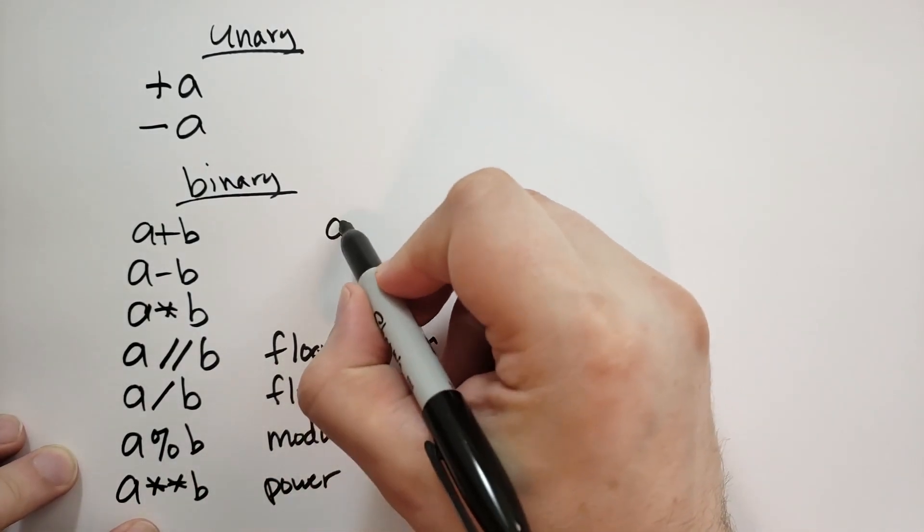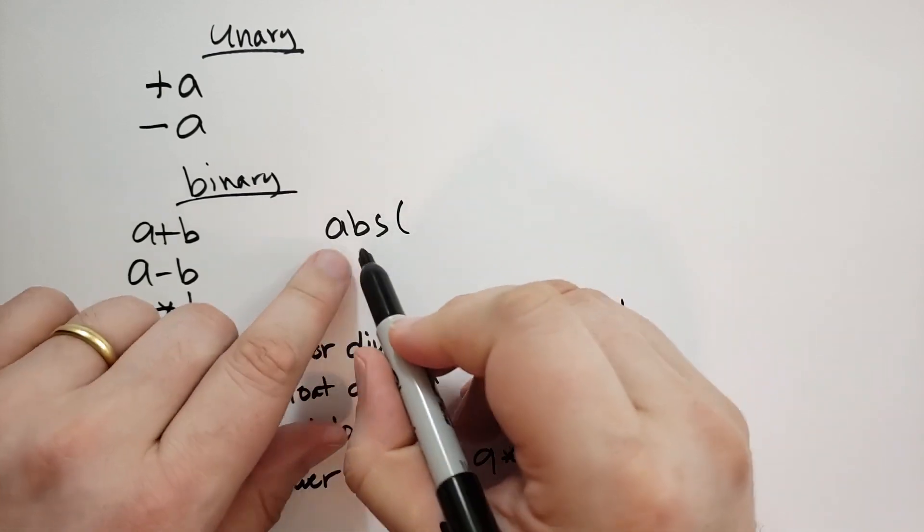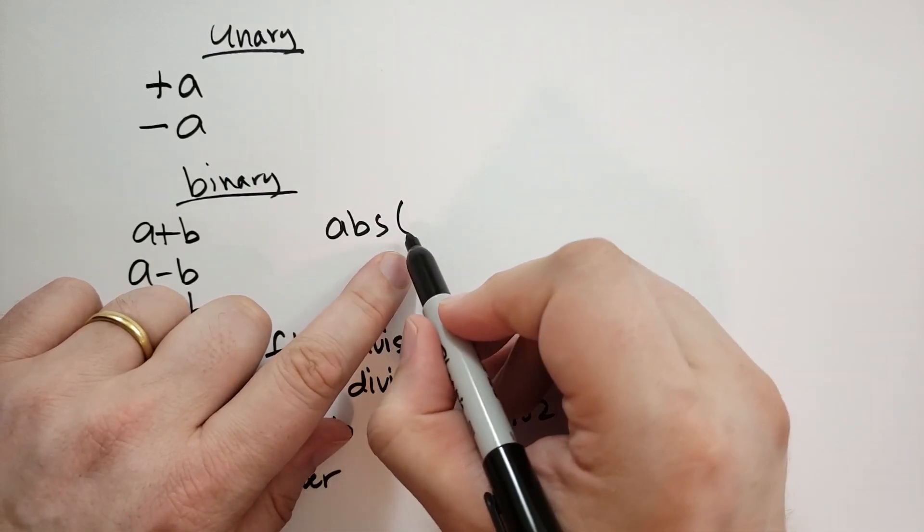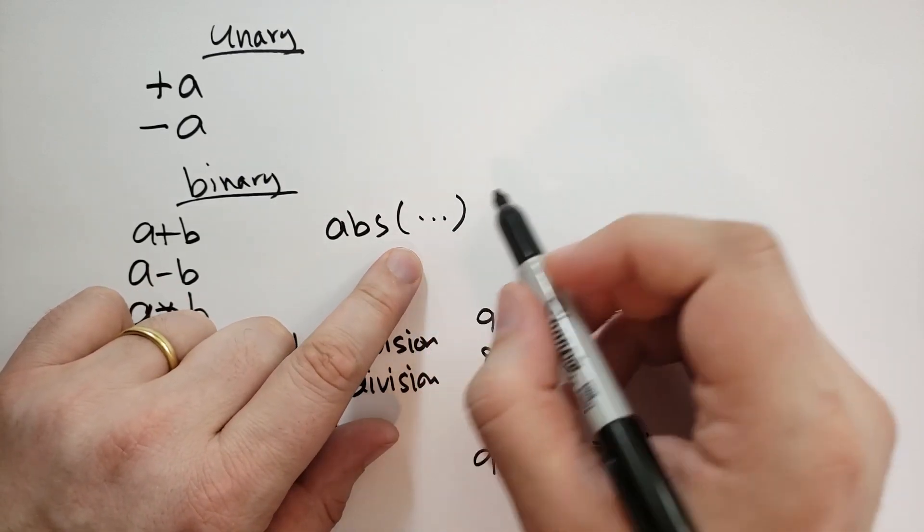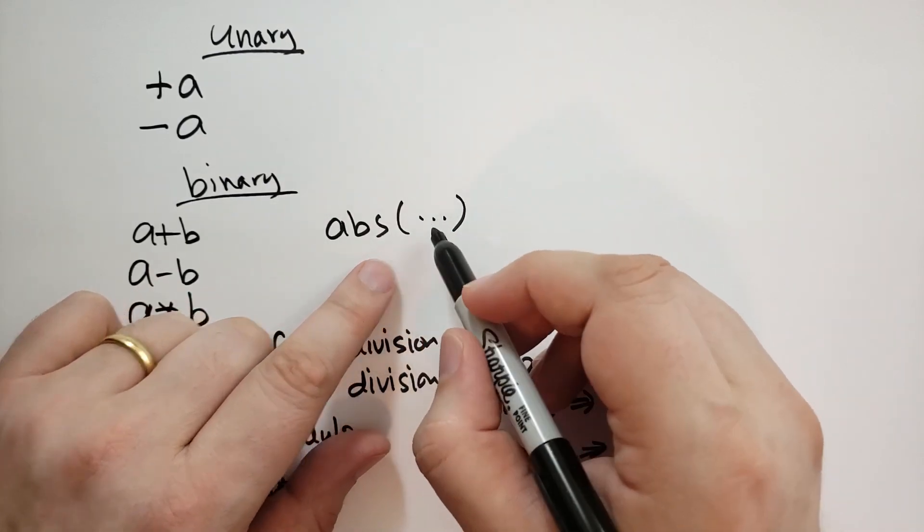In addition, I want to mention ABS. If you do ABS with a parenthesis, then whatever you put inside there, it's going to take the absolute value of. So if it's negative, it'll turn it positive. If it's positive, it'll leave it positive.